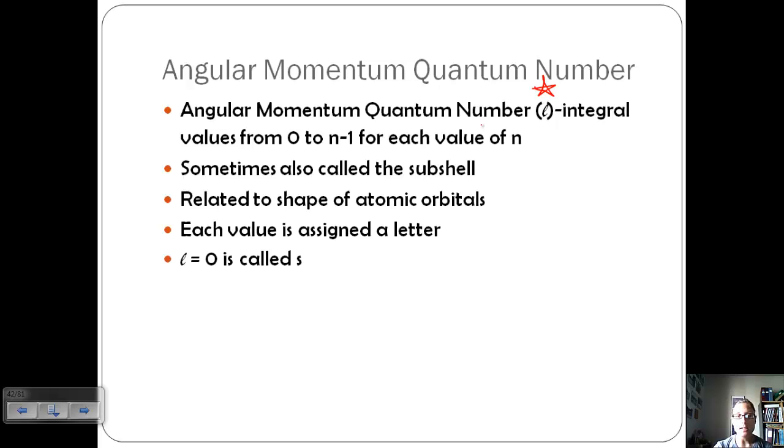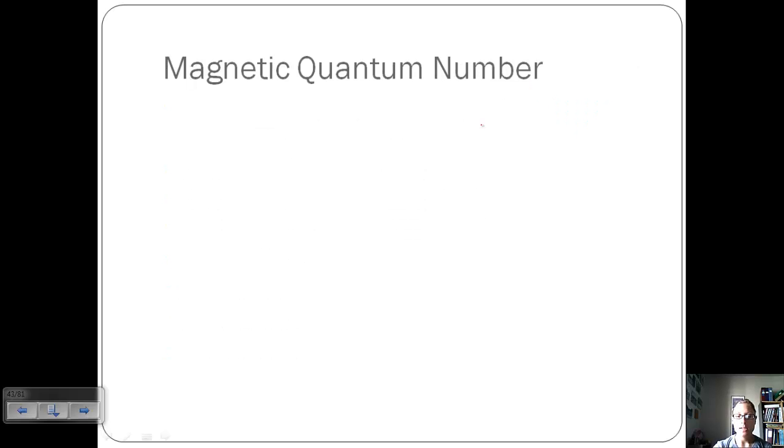Each value gets assigned a letter. If l is 0, we call it the s subshell. If it's 1, it's called p, 2 is d, 3 is f. Or 4 goes to g, and pretty much after that, we don't go further than 4.